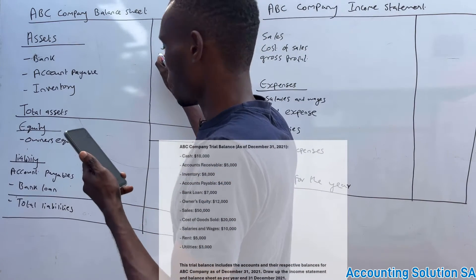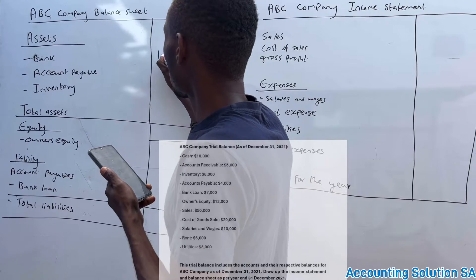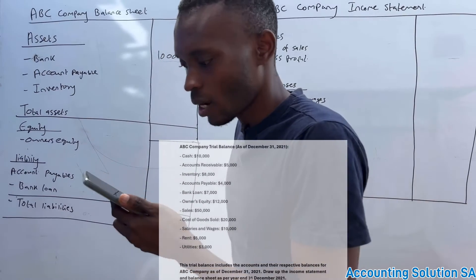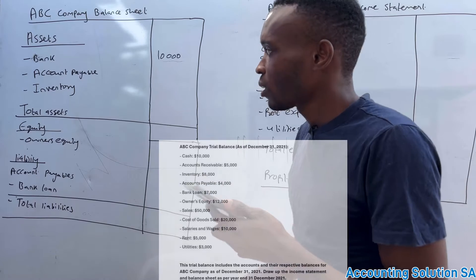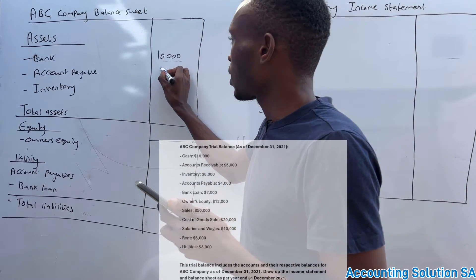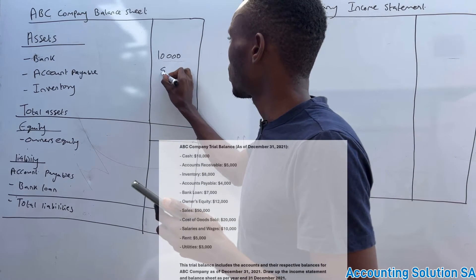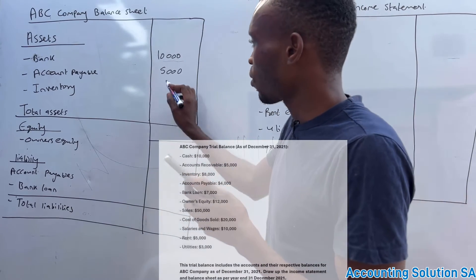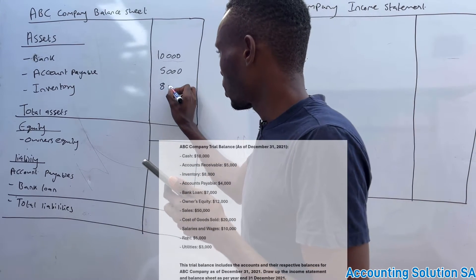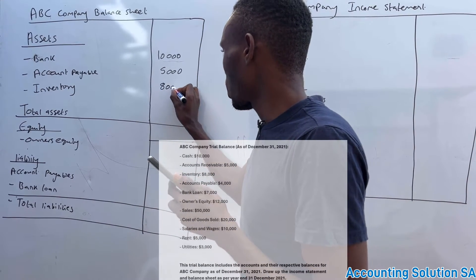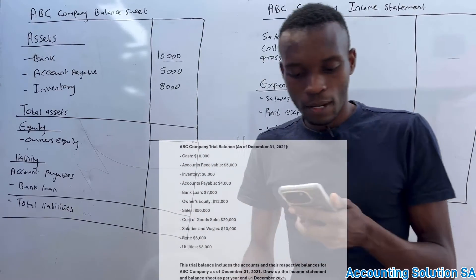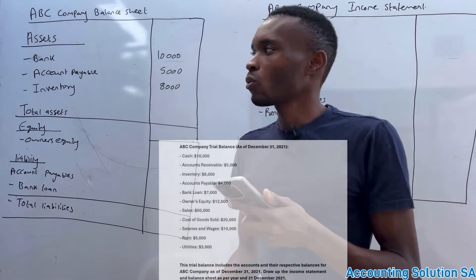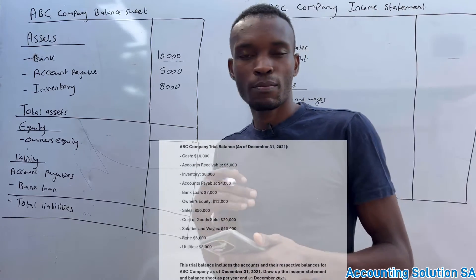Account receivable of 5,000 is also part of assets, so we record it under the balance sheet. After that we also have inventory of 8,000.